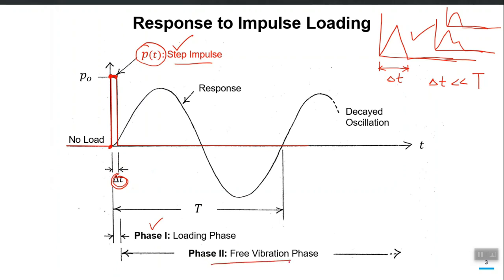Phase two is actually the free vibration phase. It starts from where the loading ends and continues until the oscillation decays to a very negligible value. So we have two phases of response: the loading phase — the response during the time when there was loading — and then the free vibration phase two. The yellow or orange line is our response u(t), which we want to calculate.